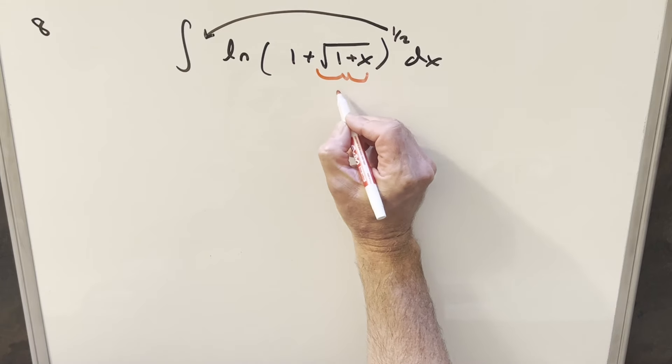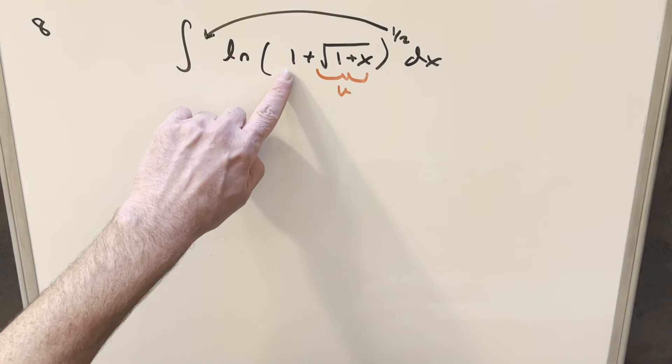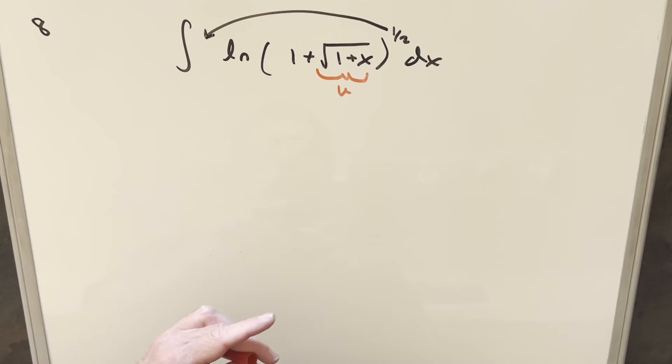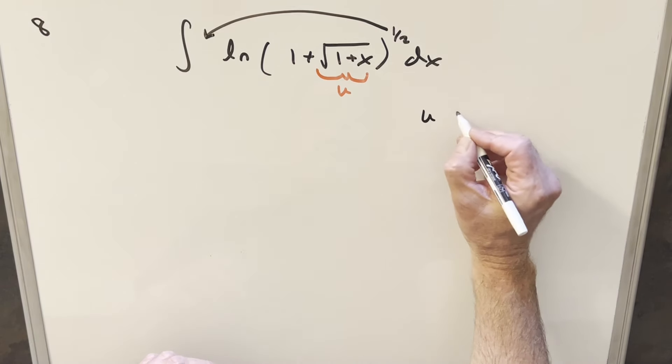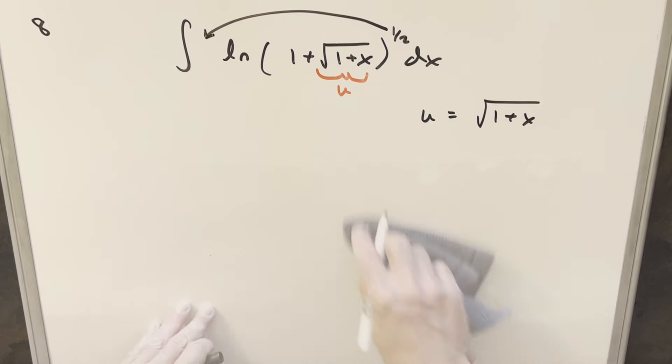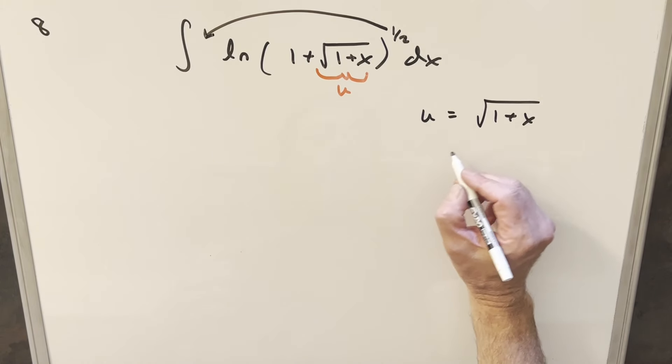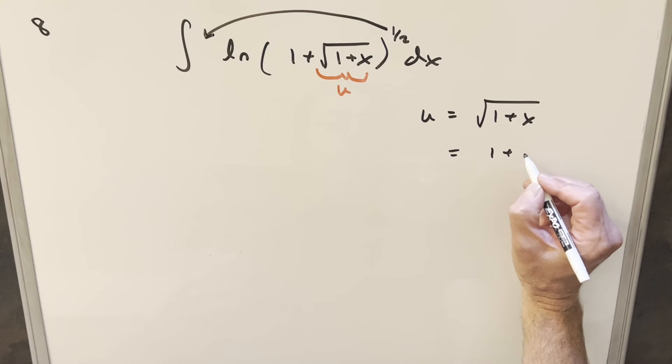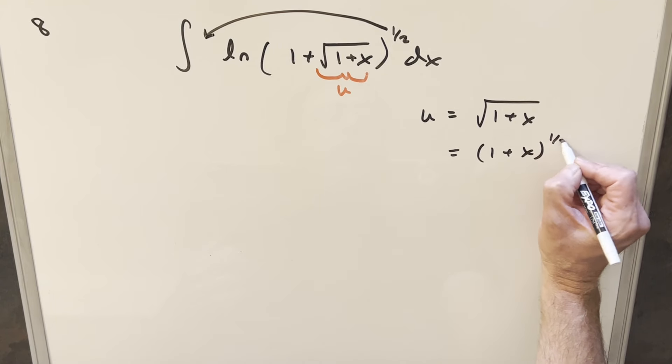If I do a u substitution just for the square root of 1 plus x, I'm not going to include the 1 because I think it's going to help me back substitute later. So doing this, we'll set our u equal to square root 1 plus x. Then next I'll go ahead and take the derivative, but you know what I'll do? I think I'll rewrite it just so that we can show that we're using power rule here.